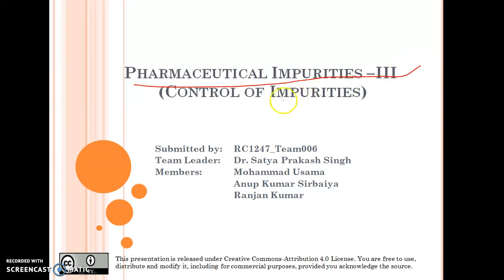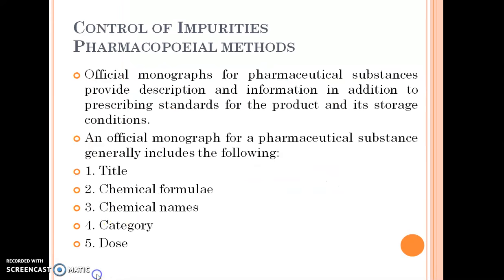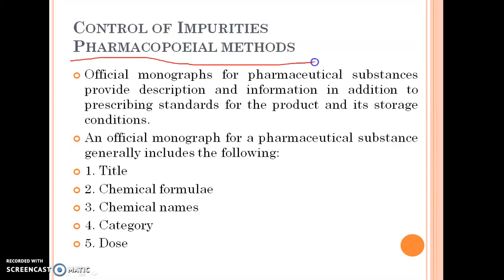This is the third part of pharmaceutical impurities, focusing on control of impurities. In this section, we will discuss how impurities can be controlled. The first method is pharmacopoeial methods for the control of impurities, and the first topic is the official monograph.